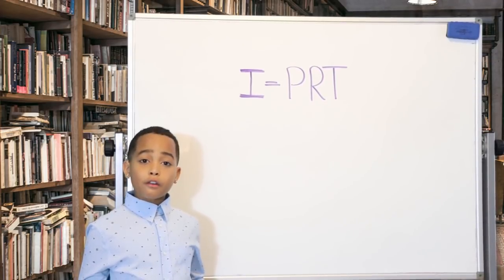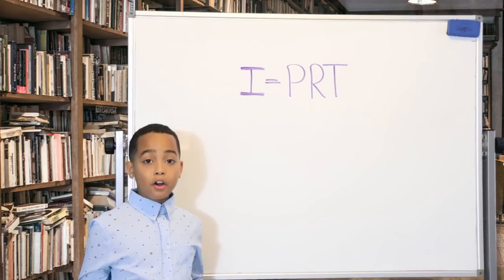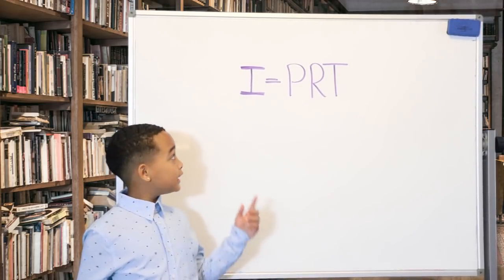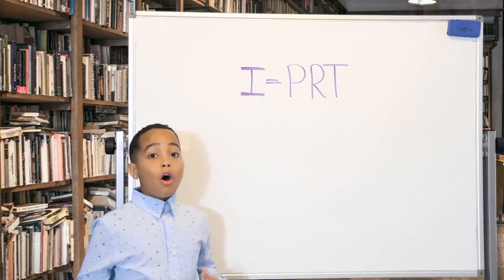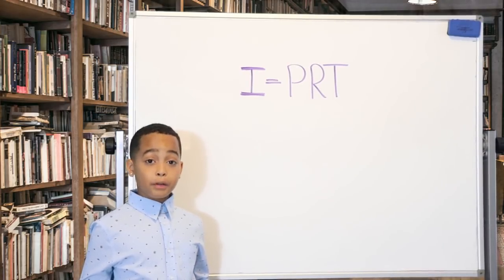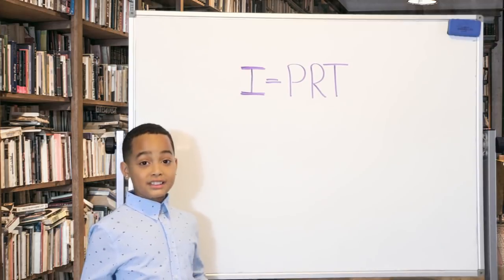I equals PRT, where I is the interest, P is the principal or the starting amount, R is the rate expressed as a decimal, and T is time in years.